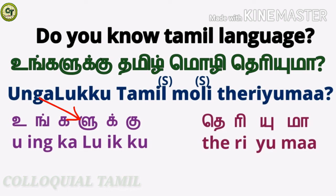This 'லு' is pronounced with a big L sound — your tongue should touch the middle roof of your mouth; I am using capital L to represent it. This is 'க்', a consonant. This is 'கு', a short sound letter. Together: 'unngaLukku.' So the full sentence is: 'unngaLukku Tamil moLi theriyumaa?'